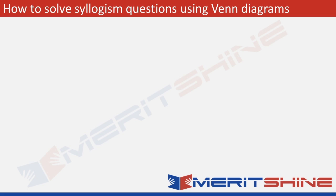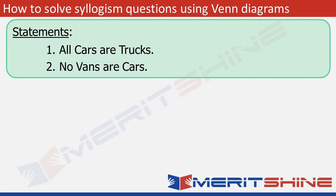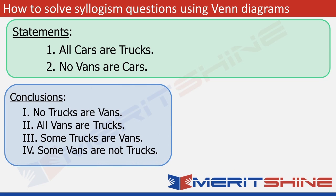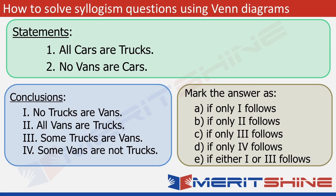This is the typical structure of a syllogism question. You are generally given between 2 to 4 statements — these are nothing but premises that we discussed in the last tutorial. They are followed by some conclusions, again varying from 2 to 4 in number. On the basis of the statements, we need to find out which of the conclusions can be inferred, and so we mark our answer accordingly.